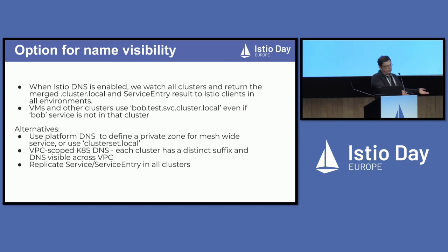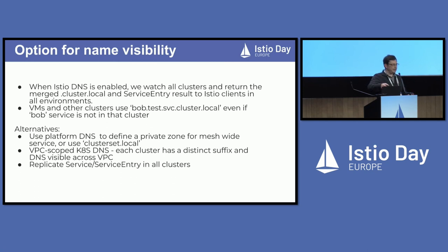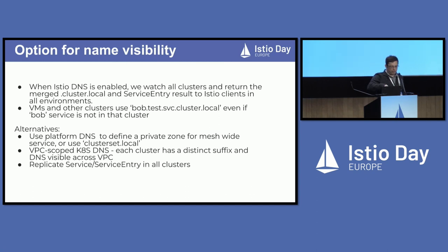The other option is to use the platform resolver. In that case, you use some automation tool like Terraform to program the platform DNS resolver with a private zone. You can use a name like cluster-set.local — well, this is taken by Kubernetes multi-cluster — but you can use example.com or prod.example.com. You can program only the names that actually need to be shared across clusters, not all services. You'll be able to use your own domain, like prod.mycompany.com instead of cluster.local, and then obviously use service entries to make sure your domain names are known to each cluster.